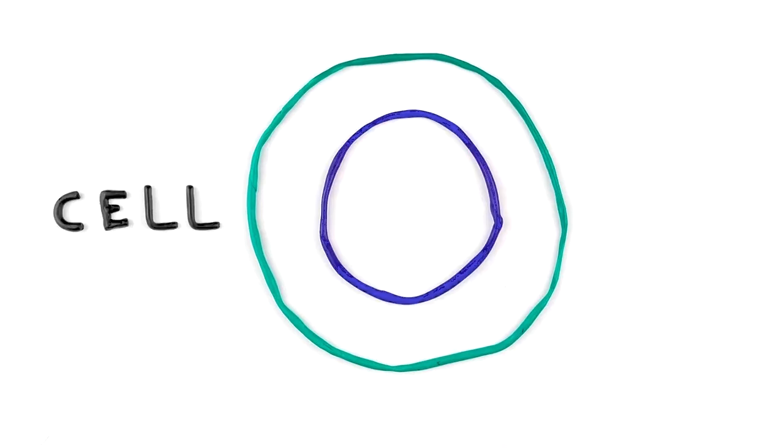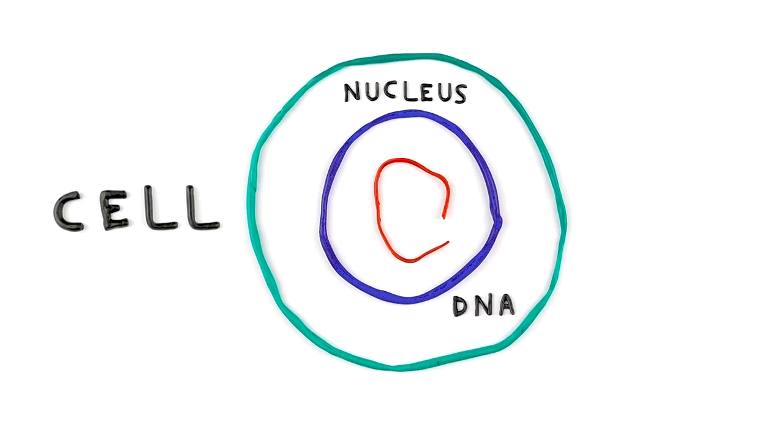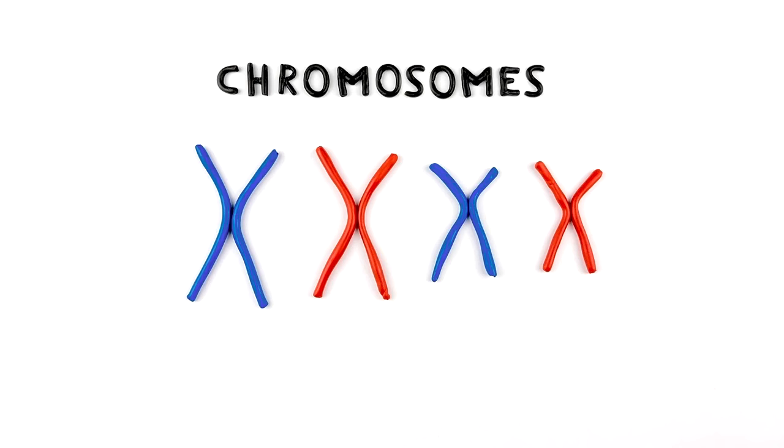Just like mitosis, the parent cell copies its DNA before cell division begins, so each single-stranded chromosome becomes double-stranded.